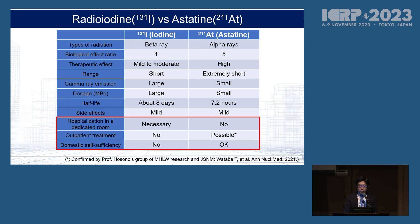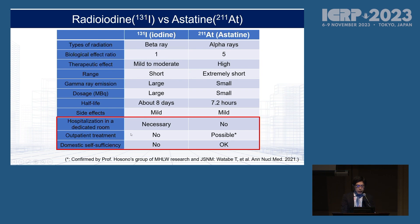This is a comparison table between iodine-131 and Astatine-211. Astatine is an alpha emitter, so a higher therapeutic effect is expected. In iodine-131 treatment, we need to keep the patient in a dedicated room to protect the public and caregivers from radiation exposure. But in Astatine-211 therapy, we don't have to keep the patient in a dedicated room. I will talk about this point later.